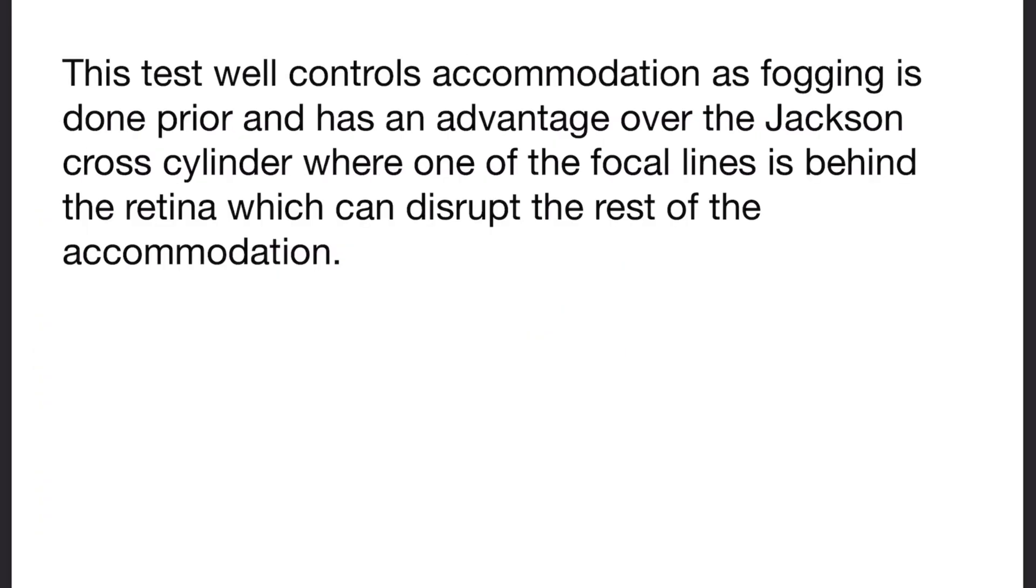One very important advantage of these astigmatism charts is that fogging is done prior to this test. So this test has an advantage as it very well controls the patient's accommodation. Whereas in case of Jackson cross cylinder, one ray is behind the retina and the other in front of the retina, coinciding the circle of least confusion at the retina. In such cases, as one ray of light is behind the retina, it can also act as a stimulus for accommodation.